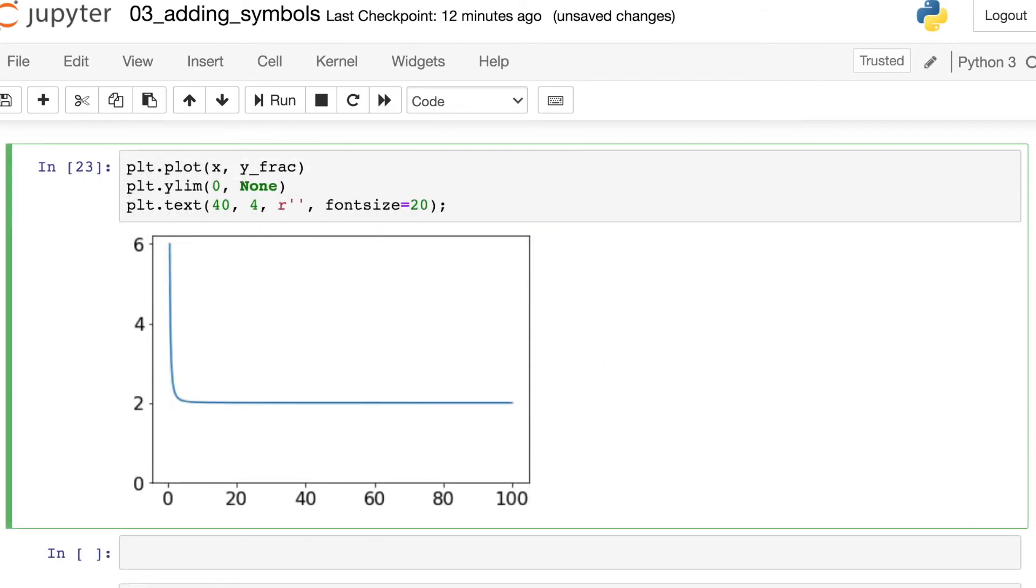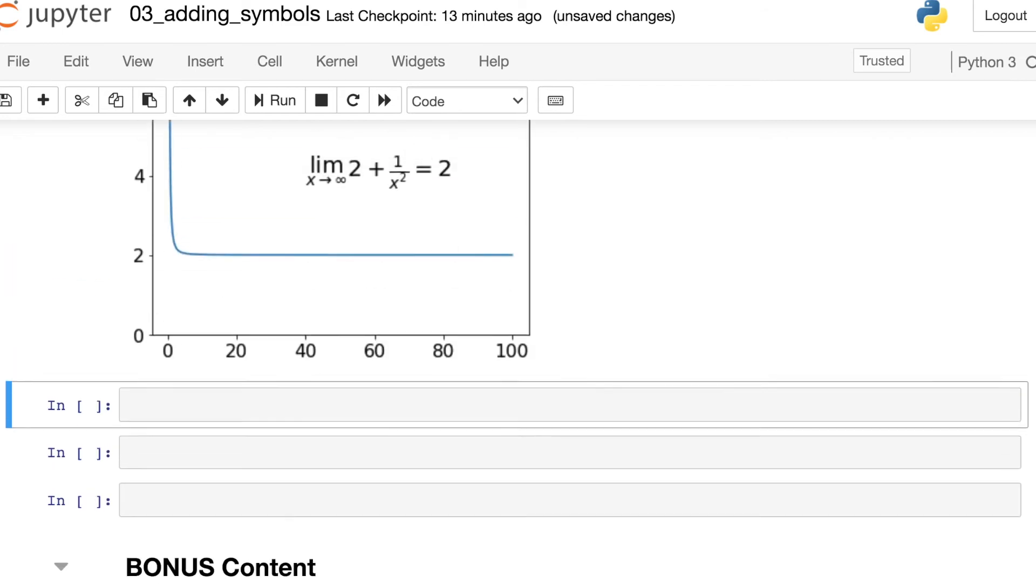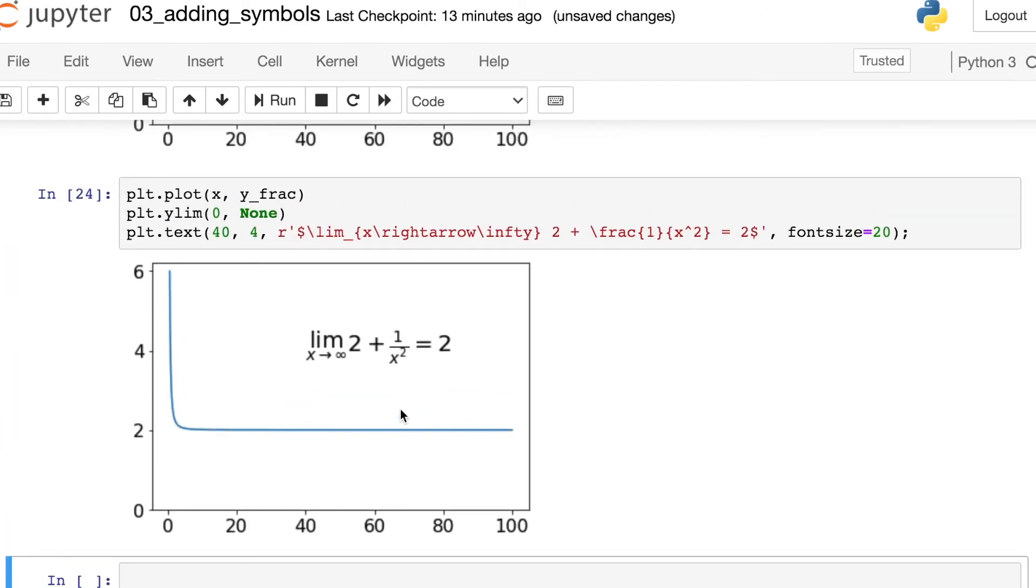And we can actually get quite a bit more fancy with the equations that we're displaying on our matplotlib figures. Here I'm creating a limit, and so you'll see I use the underscore to indicate that I'm putting something underneath the limit. And then I create a fraction and I write a whole equation out here.